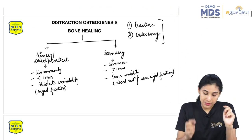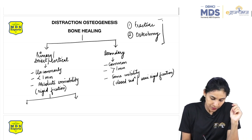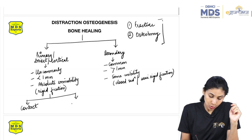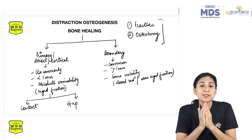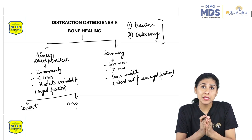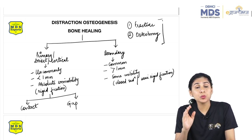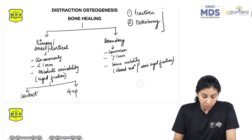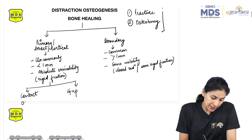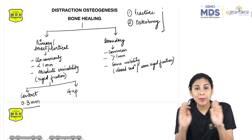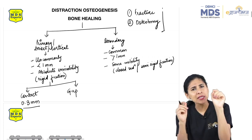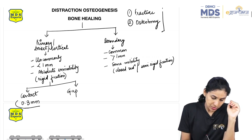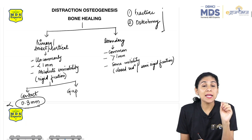Primary bone healing is of two types: contact healing or gap healing. Many MCQs are commonly asked in exams on the types of bone healing. Contact healing occurs when the gap is up to 0.3 mm. When you have applied plates, compressed the fracture fragments with absolutely no mobility, and the gap is only 0.3 mm or less, then there will be contact healing.